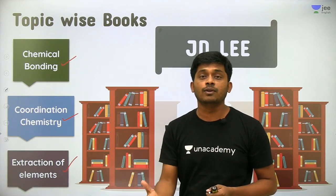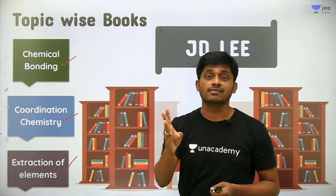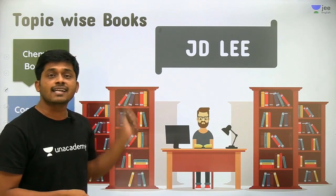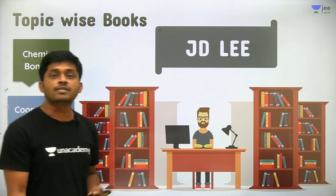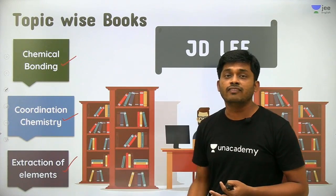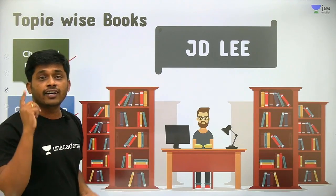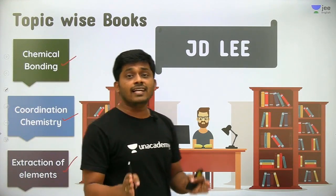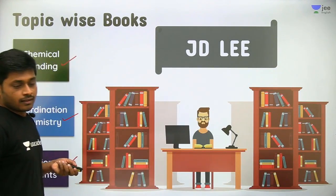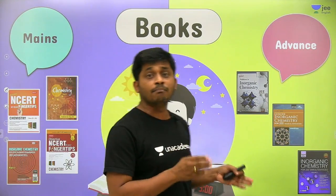If you don't have JD Lee, just take a photocopy of these three chapters from a friend. The questions and theory are very good — you will easily understand back bonding, Bent's rule, hybridization, coordination isomerism, VBT, CFT, and all the theories. This is very important for both Advanced and Mains levels. Every piece of information from tables must be read thoroughly.